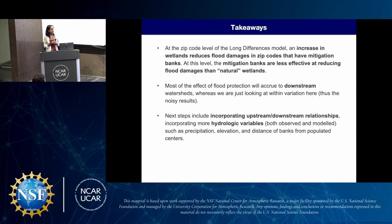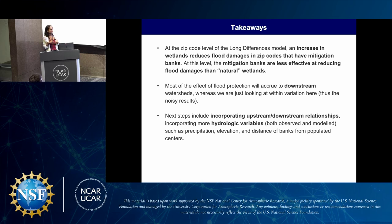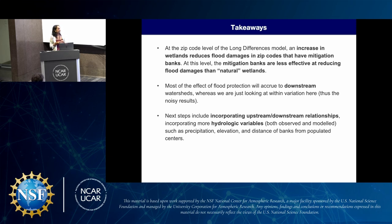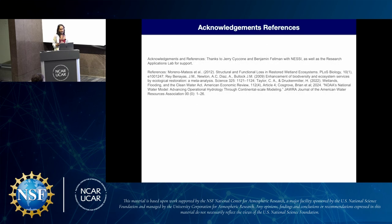The takeaways are that increased wetlands reduced flood damages at the zip code level in zip codes that have mitigation banks. At this level, mitigation banks are less effective than natural wetlands at reducing flood damages, and the main takeaway is that flood protection will accrue to downstream communities — something that needs to be accounted for in future studies. My next goal is determining what banks are upstream or downstream of communities, and I'd also like to incorporate more physical hydrology elements including precipitation, elevation, and distance from communities. I'd like to thank Jerry, Ben, Tim, and especially Kevin, who sat with me for many hours every day. These are my references. Thank you.